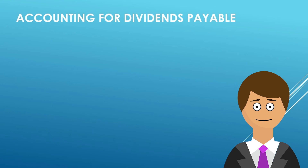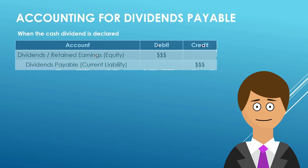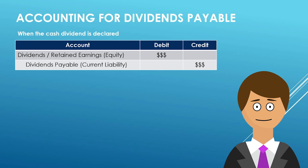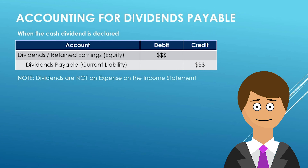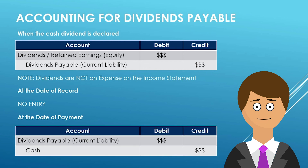Let's look at the accounting for dividends payable. When the cash dividend is declared, we record that dividend as a debit to retained earnings — an equity account — showing we're reducing retained earnings, and then we credit dividends payable, a current liability. Note that dividends are not an expense on the income statement. It is a reduction of retained earnings in the equity section. At the date of record, no entry, as we said before. Finally, at the date of payment, we reduce that current liability of dividends payable and reduce our cash that we're dispersing for the dividend that was declared.